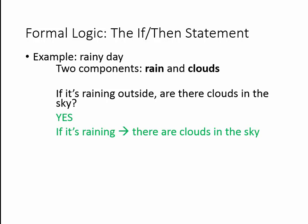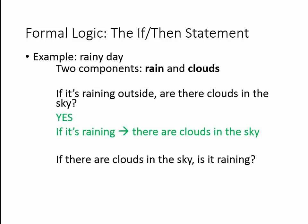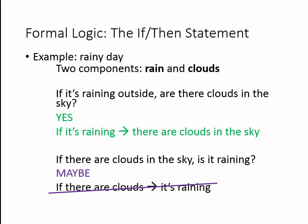The second question we want to ask ourselves is: if there are clouds in the sky, is it raining? The answer is maybe — we don't know for sure. There could be clouds in the sky and it's just a gloomy, overcast day with no rain. Therefore, we can't create an if-then statement going in that direction; we can't go from the necessary term to the sufficient term.